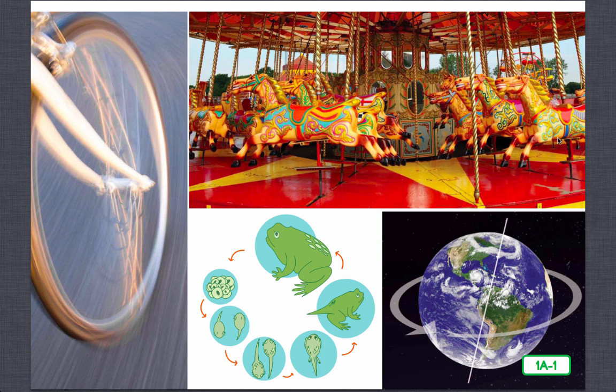When something repeats or happens over and over again in the same order, it is called a cycle. There are cycles happening all around you all of the time. In all cycles, there is a starting point. Things in a cycle always come back to the starting point before starting over again.